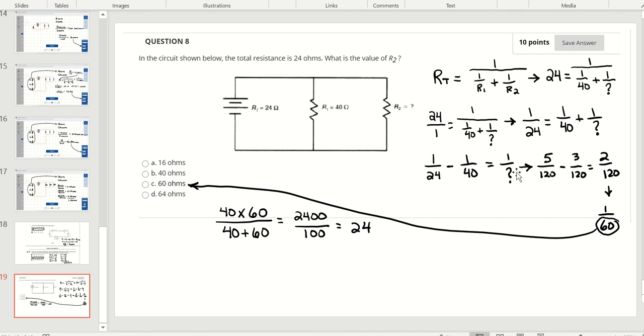If we find the common denominator for these two, it is 120, so this is 5 over 120 minus 3 over 120. The result is 2 over 120 or 1/60th, so 60 is our answer, 60 ohms.